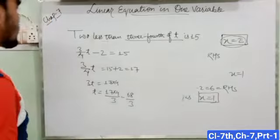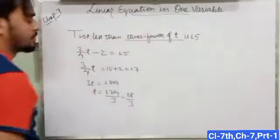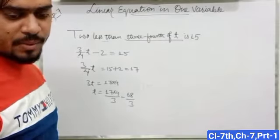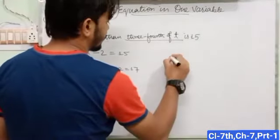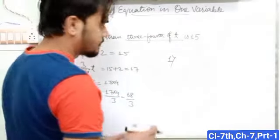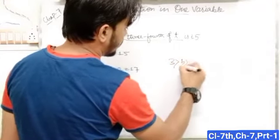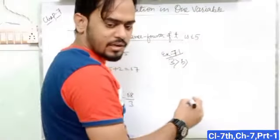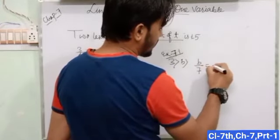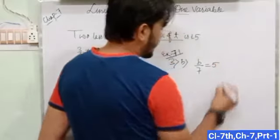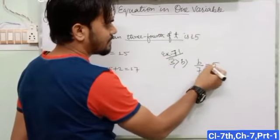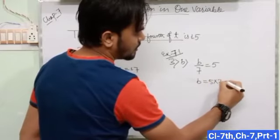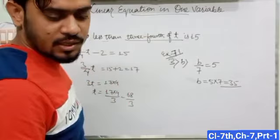Now we have some questions from Exercise 7.1. The question is: write the equation for the following statements. A number b divided by 7 gives 5, that means b/7 = 5. So b = 5 × 7 = 35.